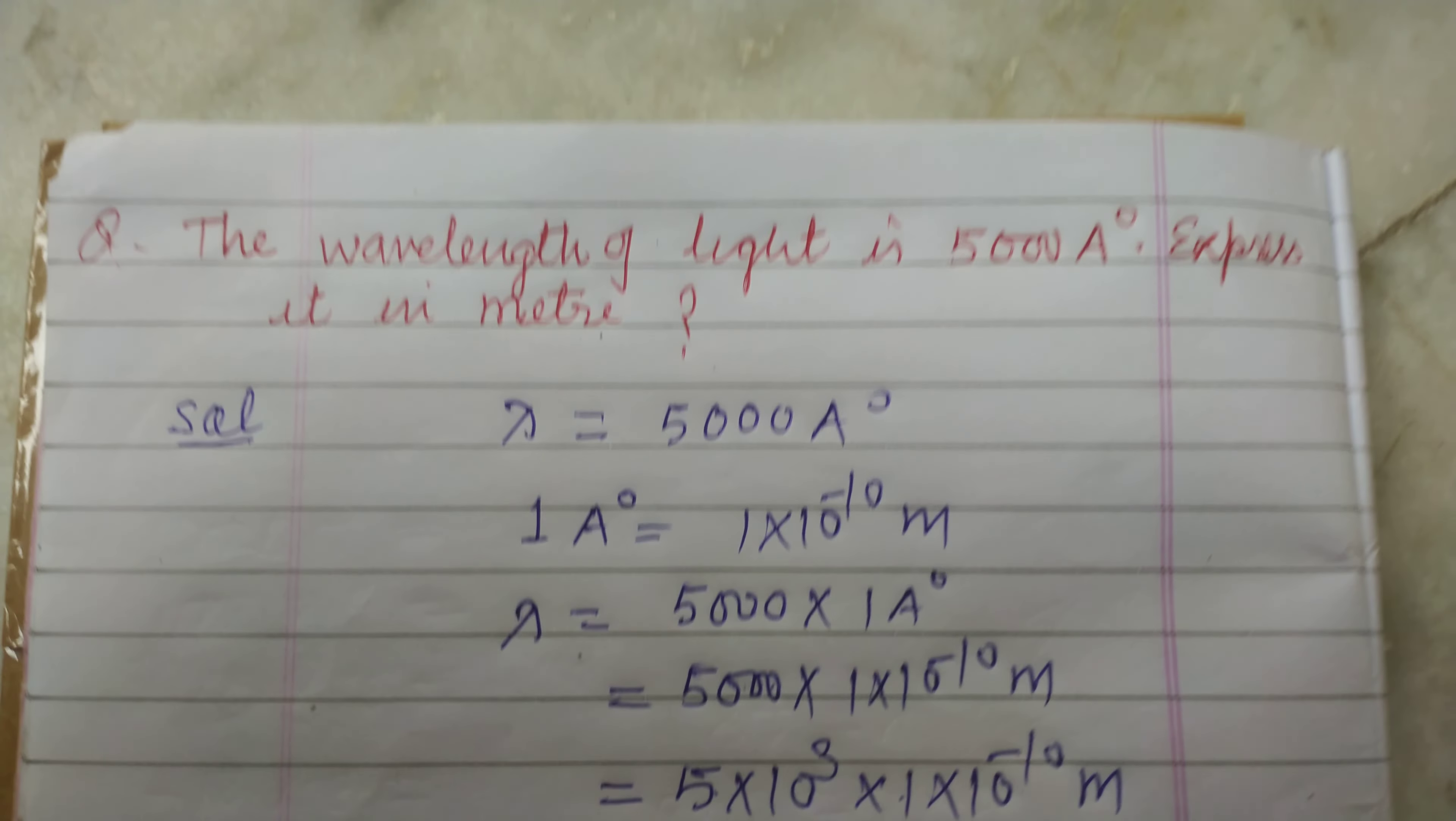So we put the value and find the lambda in meter. So 5000 into 1 angstrom. We write it as 5000 into 1 into 10 to the power minus 10 meter.